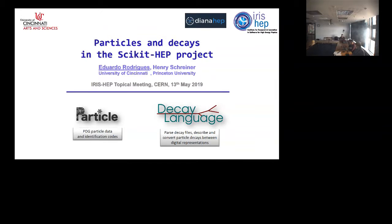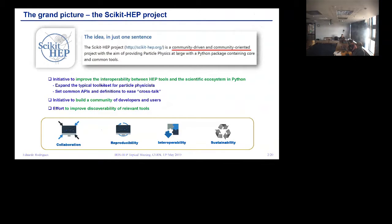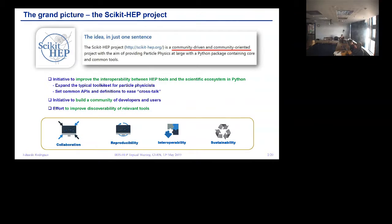We'll be talking about the two packages called Particle and Decay Language. A quick word on the scikit-hep project itself: it's community-driven and community-oriented, including a not-so-small set of packages. It tries to improve interoperability between HEP tools and the scientific ecosystem in Python, build a community of developers and end users, and improve capability. Four keywords to keep in mind are collaboration, reproducibility, interoperability, and sustainability — because a very short software lifetime defeats the purpose of a community project.